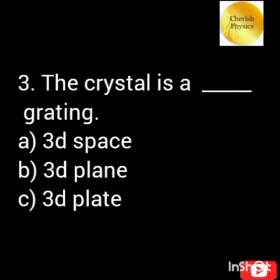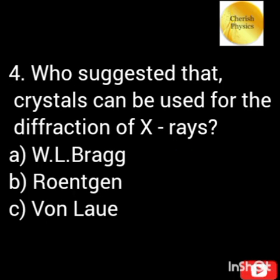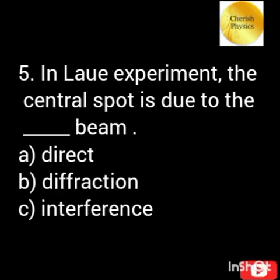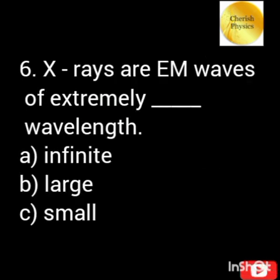The crystal is a three-dimensional diffraction grating. Von Laue suggested that crystals can be used for the diffraction of X-rays. In the Laue experiment, the central spot is due to the direct beam. X-rays are electromagnetic waves of extremely short wavelength.